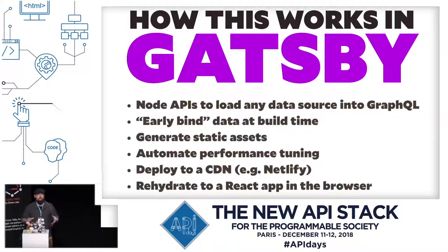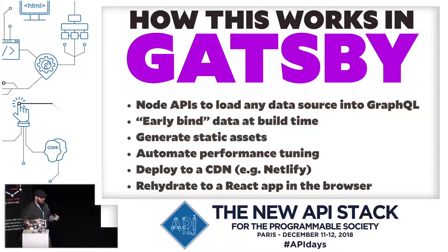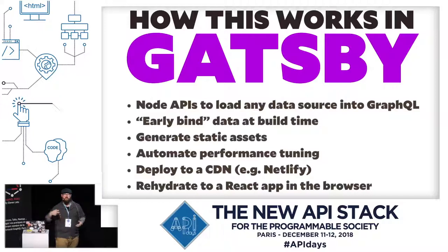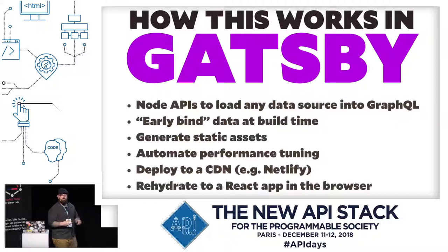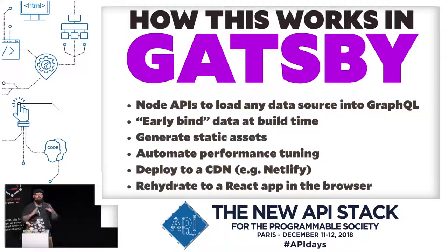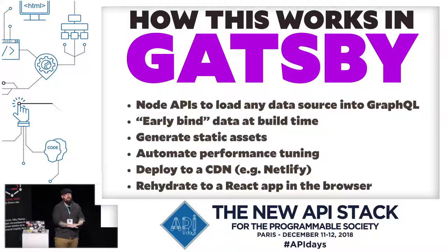In Gatsby, we've abstracted a lot of this away. We have node APIs that let you take any data source — another GraphQL API, a REST API, JSON, CSV, or the file system — and put it into GraphQL with relationships between nodes. We early bind the data at build time, so if you have a shop or blog, that data gets built ahead of time and shipped to the CDN. Your server can go down, but your built site stays live — giving you better uptime, reliability, and higher security, because if somebody hacks your CDN, they can't get database access.